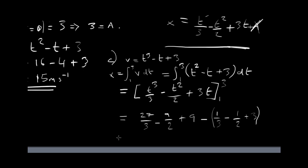So, here we now just need to do some computing. So, 27 divided by 3 is 9 minus 9 over 2 which is 4 and a half plus 9. So, 9 plus 9 minus 1 third minus a half minus 3. So, if I do this, I should get, let me see, 9 plus 9 is 18, 18 minus 3 is 15. 15 minus 4 and a half is 10 and a half. 10 and a half plus a half is going to be 11 and 11 minus 1 third is going to be 10 and 2 thirds.